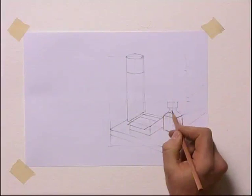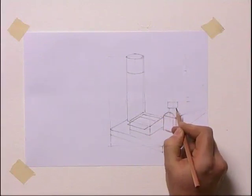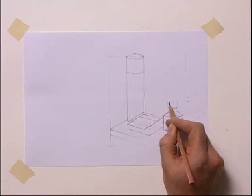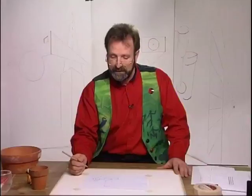And then we can put the ellipses on here by putting in the bottom side like that and an ellipse on the top like that.